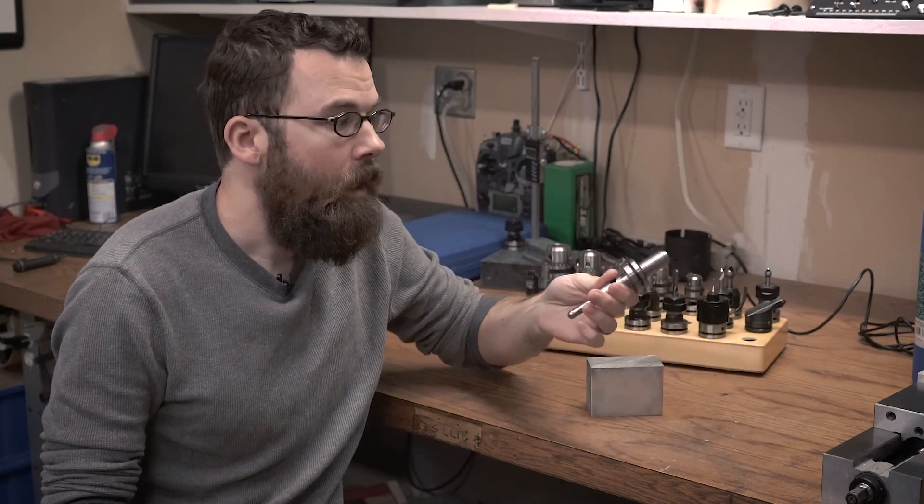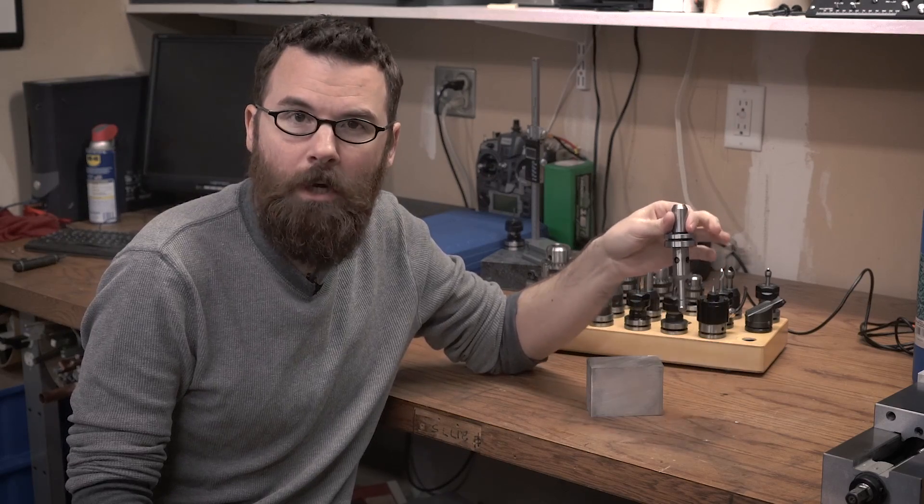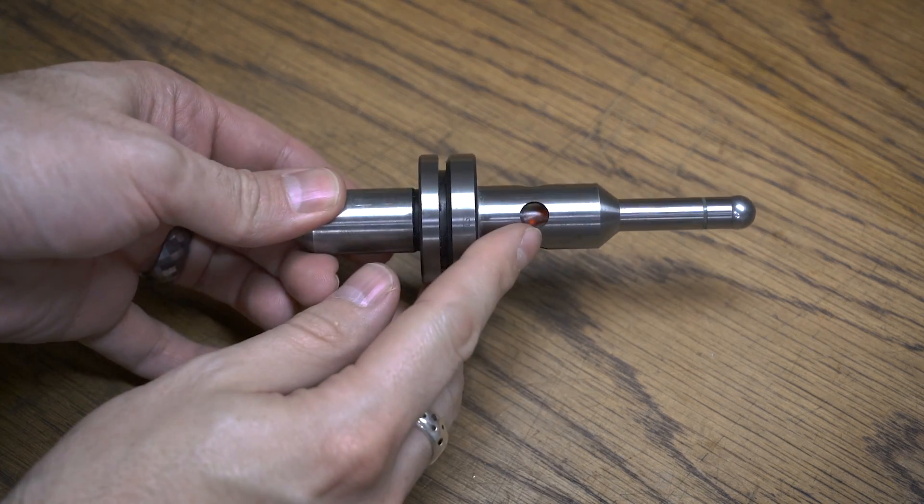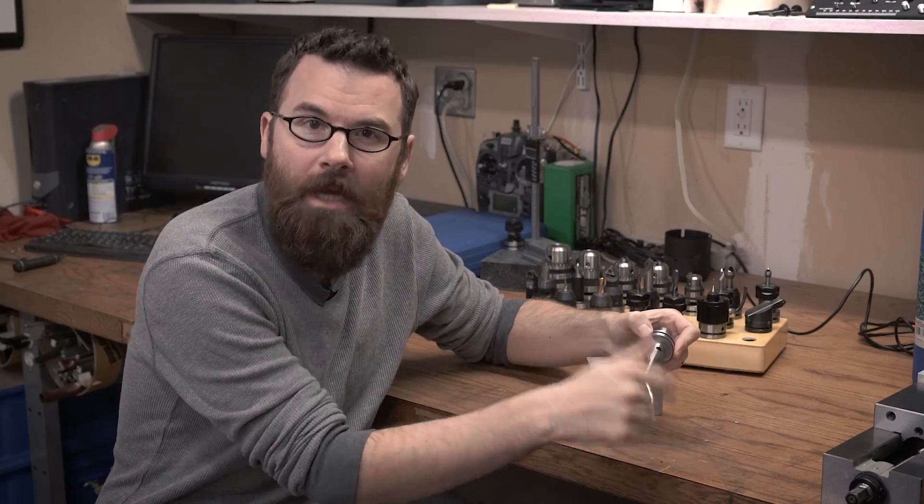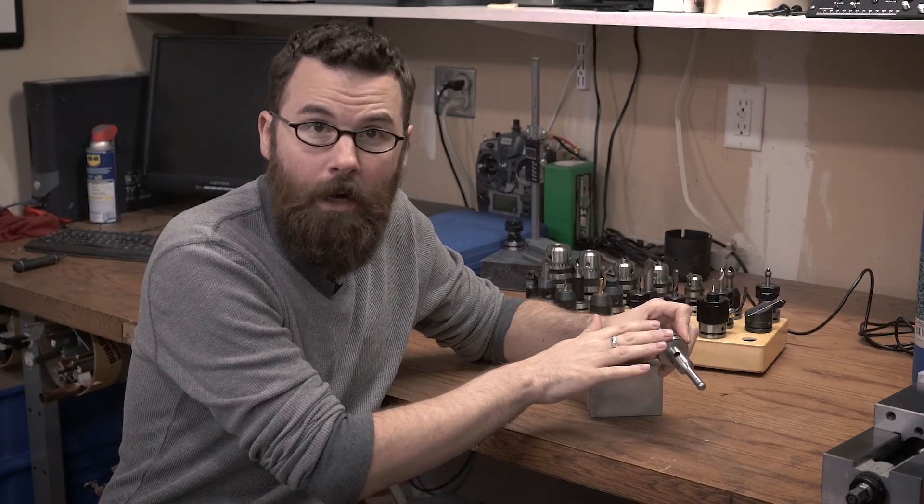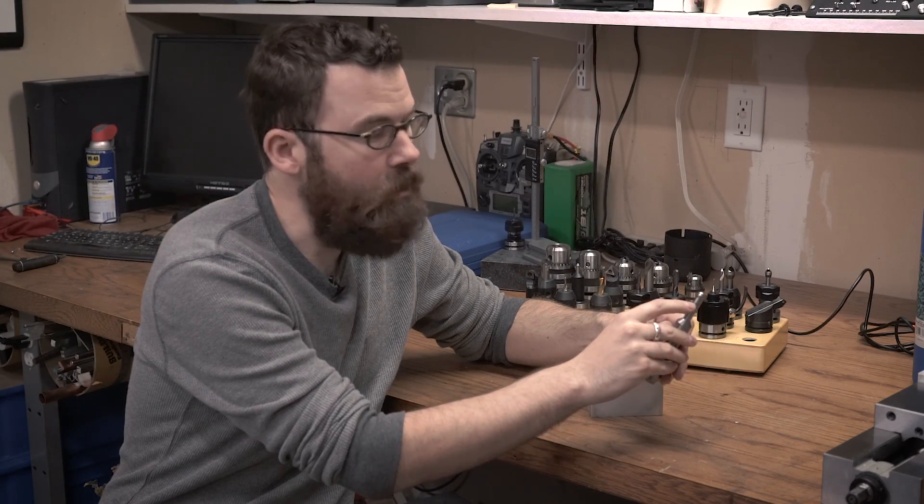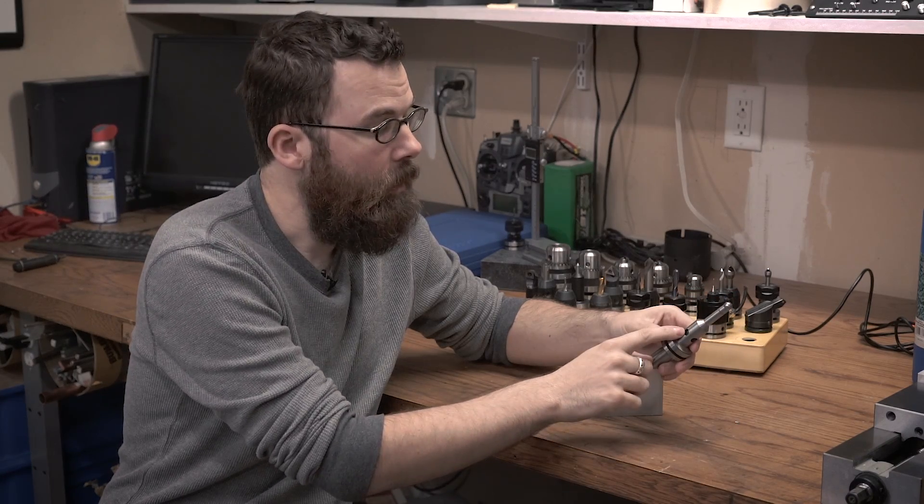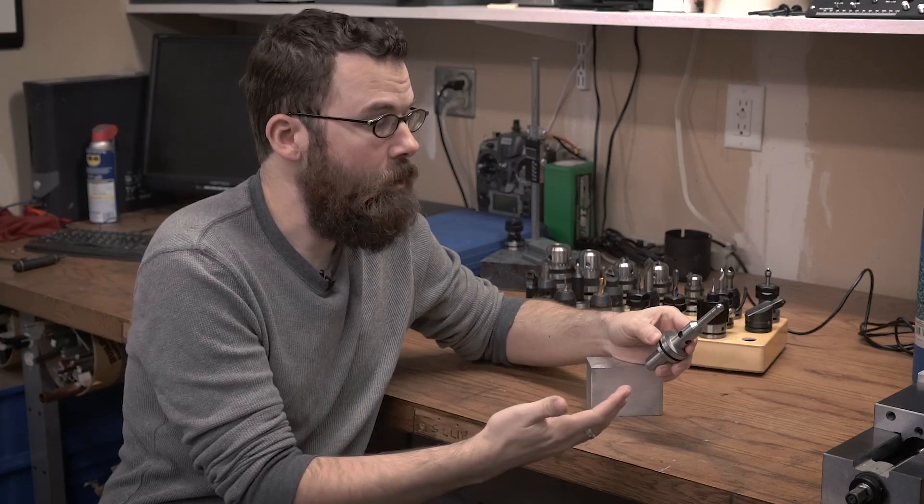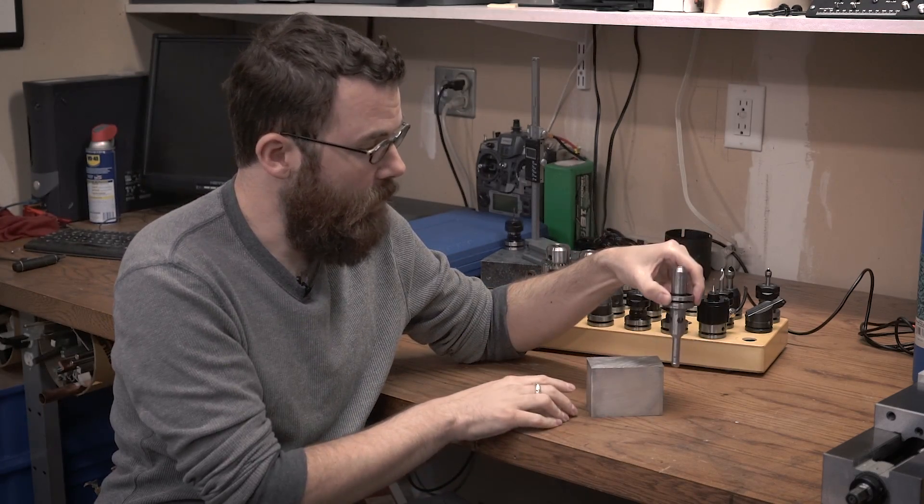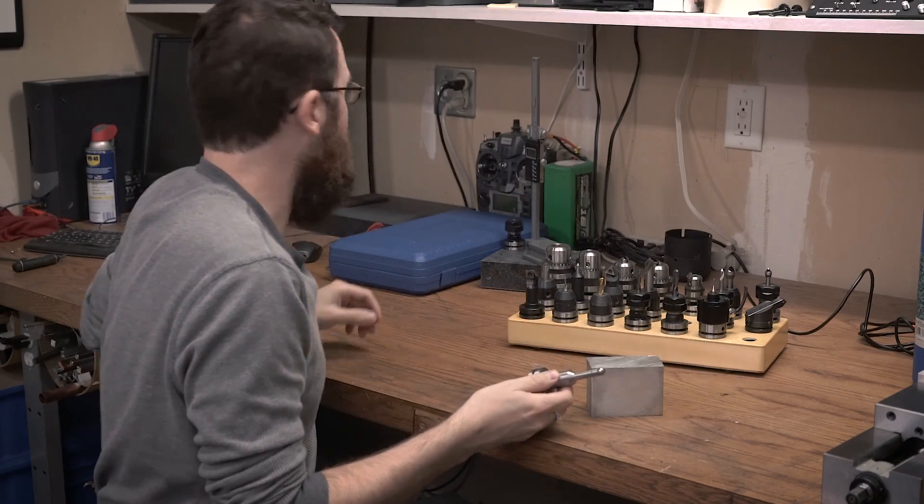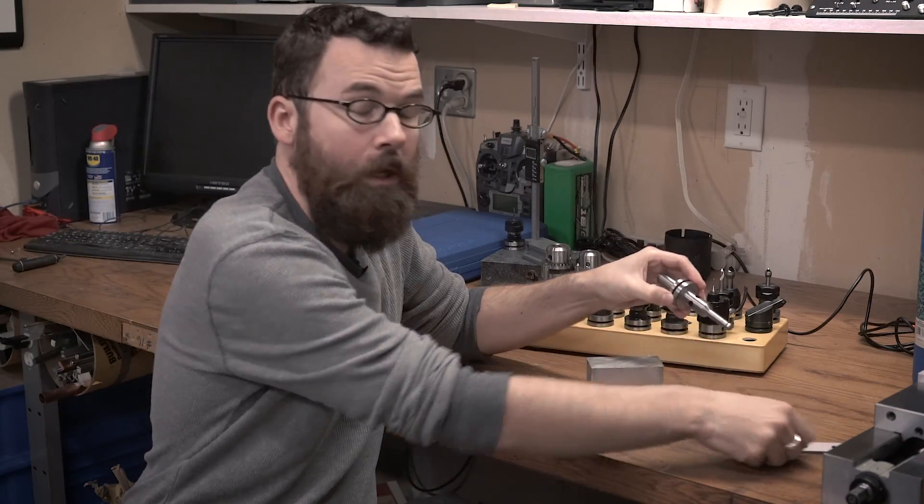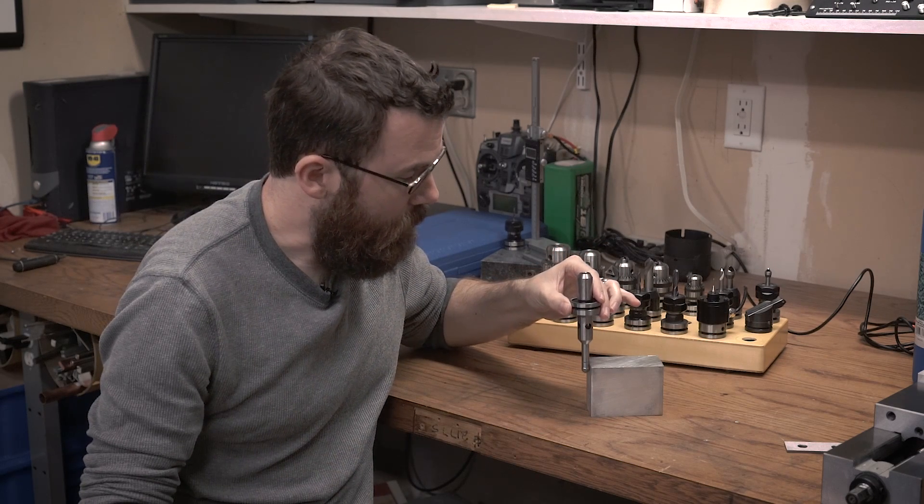A couple different options you can do. This is a Tormach edge finder. It's an electronic edge finder. It's a really simple little thing. It has LEDs inside of here, it has this little ball at the end of it that's 0.4 inch diameter all the way around, and really the machine is grounded, and there's a little section right here that you can see that's isolated from the rest of it. So when these two pieces come into contact, the LEDs light up. It's that simple. The machine is already grounded, so this is sitting on the grounded machine. When it touches that, the lights light up. And if I use parallels, you can see that if I just ground these two together, the light lights up like that.